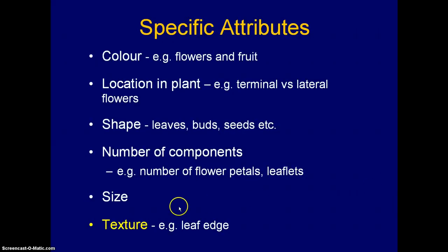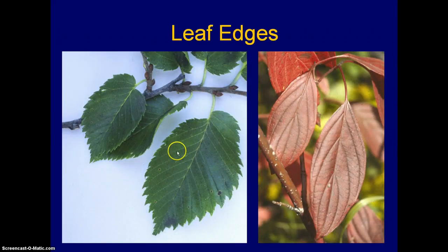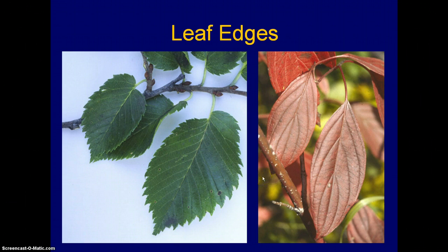Size of plants or plant parts can sometimes be useful as well. Another useful attribute is the texture of plant components. One easy one to visualize is the leaf edge: the elm leaf edge is serrated or toothed, whereas the dogwood leaf edge is smooth, sometimes known as entire. We will spend a little more time with this in the next lecture.